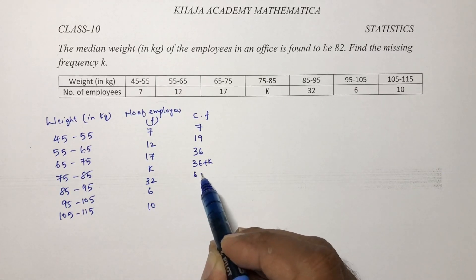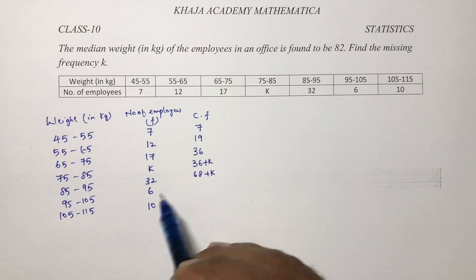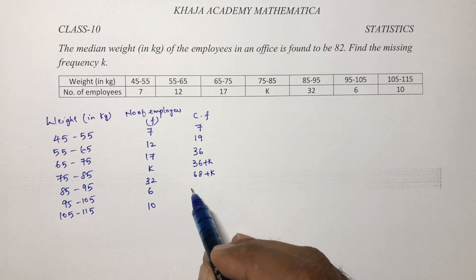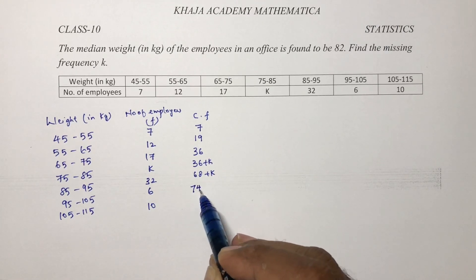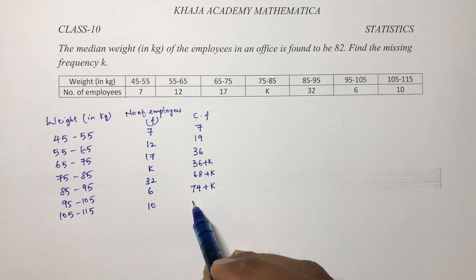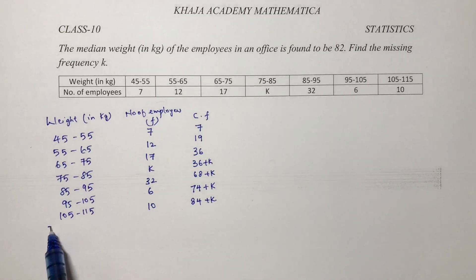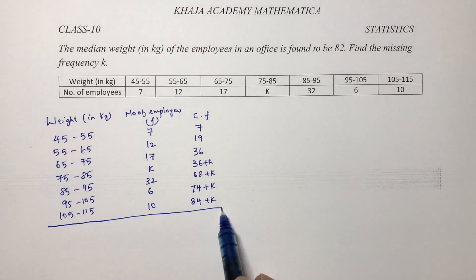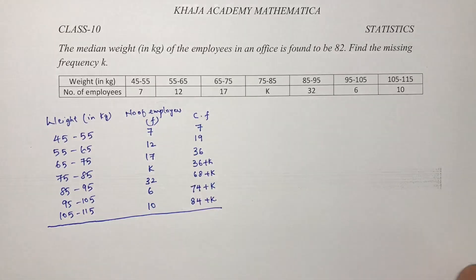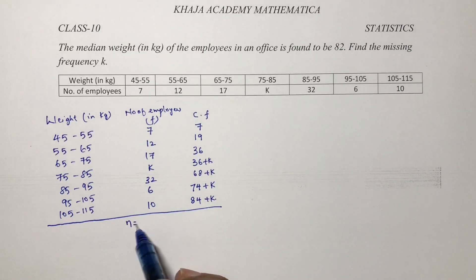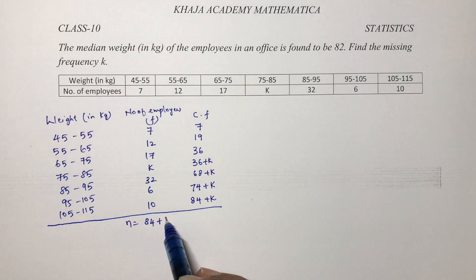And this is 36 plus k, 68 plus k, 68 plus 6 is 74 plus k, 74 plus 10 is 84 plus k. So when one value is missing they'll not give the total value also. So here the total frequency will be 84 plus k.